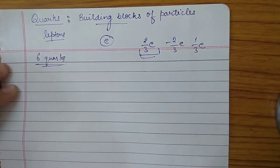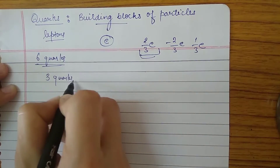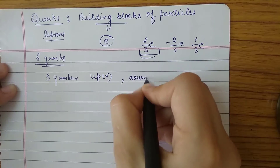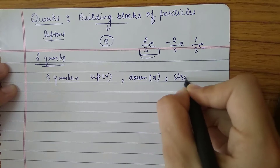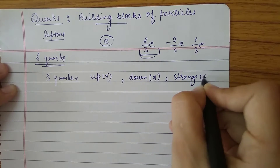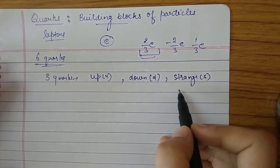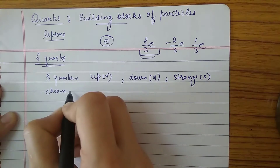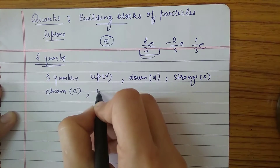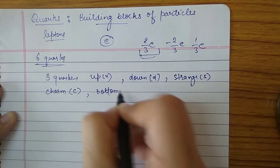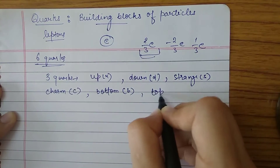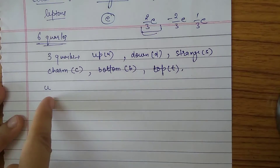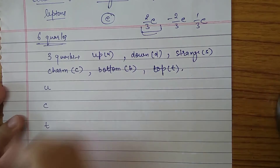Earlier, only three types of quarks were known: the up quark, denoted by u; the down quark, denoted by d; and the strange quark, denoted by s. After that, three more quarks came into view: charm, denoted by c; bottom, denoted by b; and top, denoted by t.